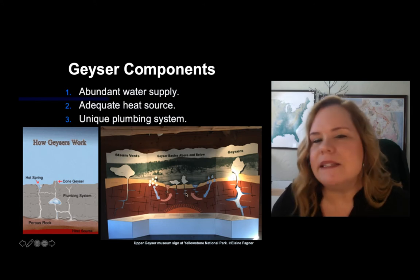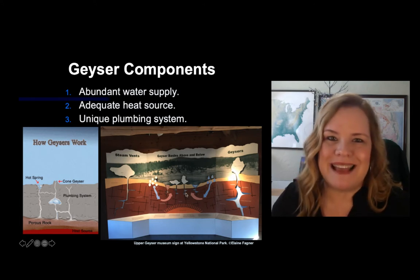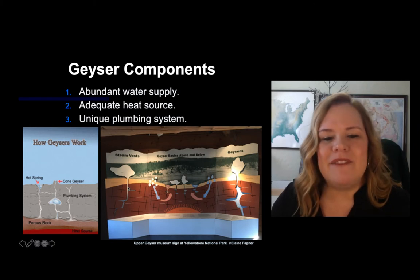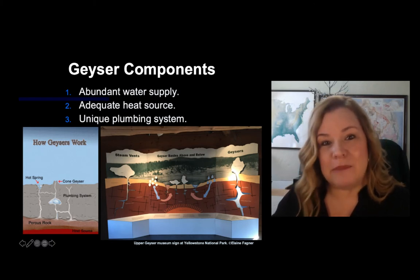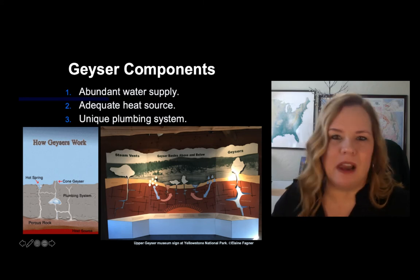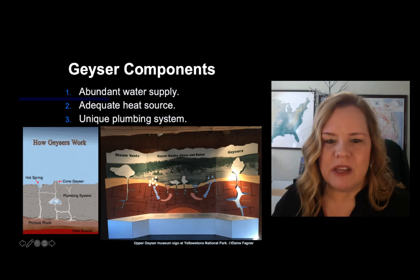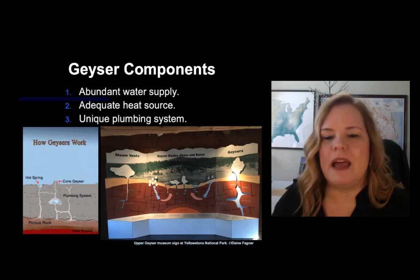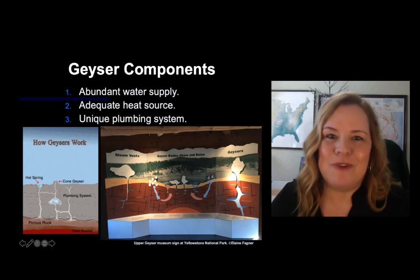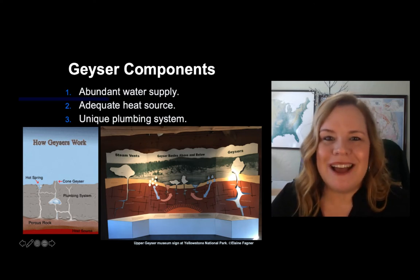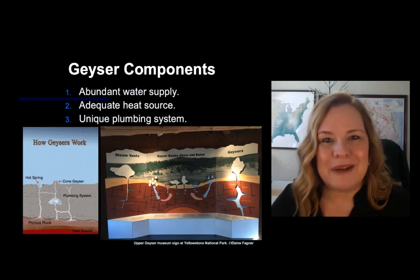The water then turns back as it's forced to the surface, creating a geyser eruption. Hot springs are missing this one component — the constriction or unique plumbing. Steam vents are really missing most of the water supply. They come up and make a lot of steam but are missing a good water supply.